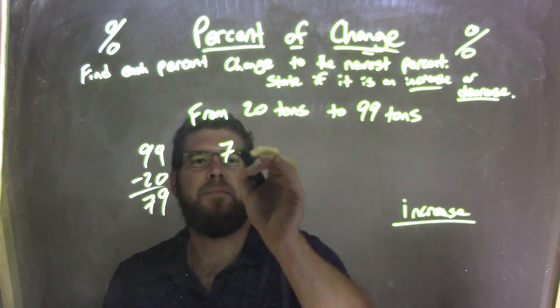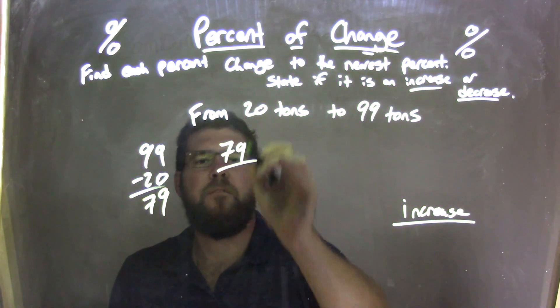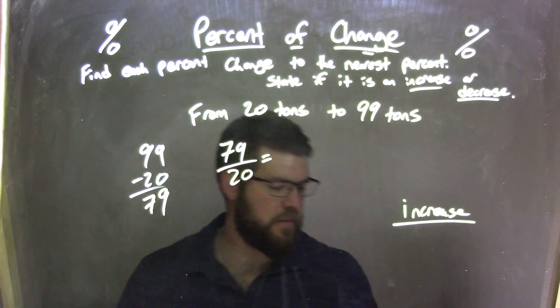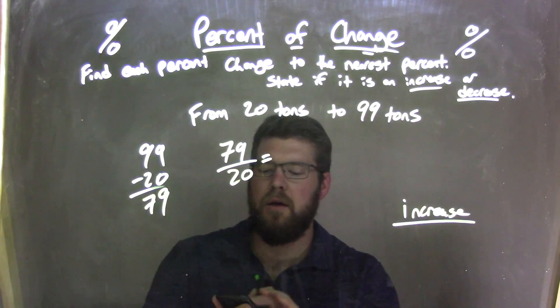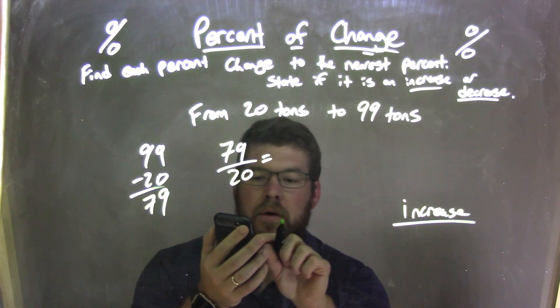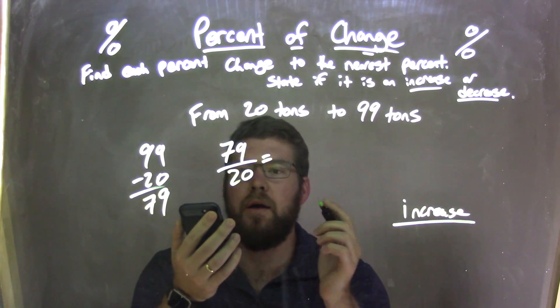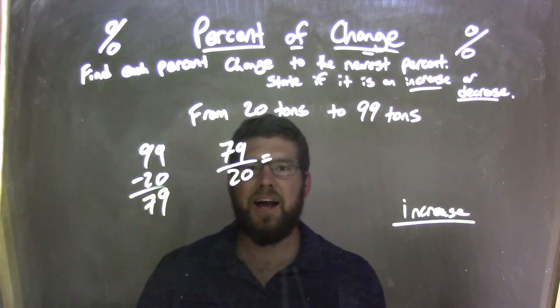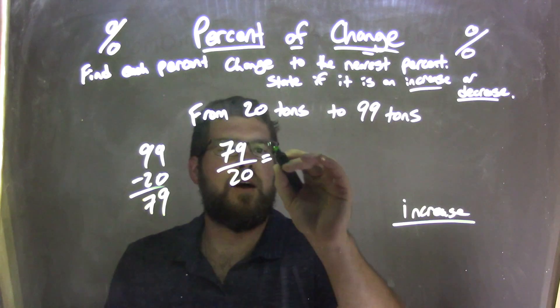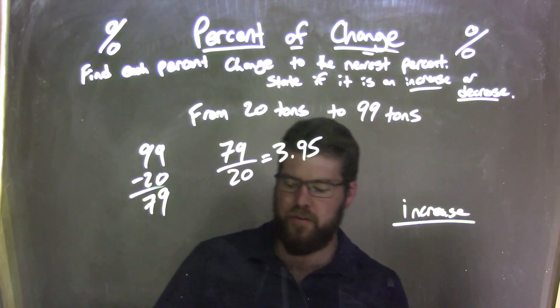We have to take that 79 and divide it by the first number, which is 20. What does that come up to be? Oh, I got trigger happy there. You can write equals. That comes out to be 3.95. 3.95.